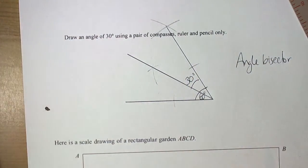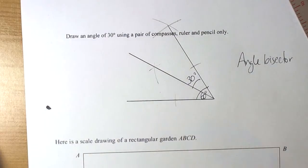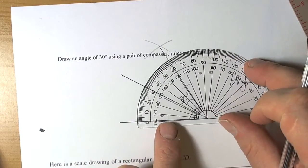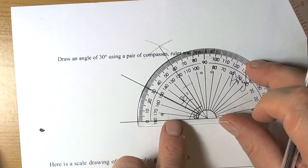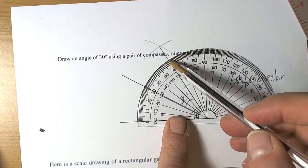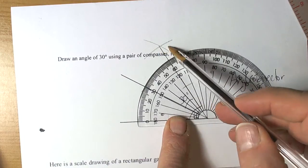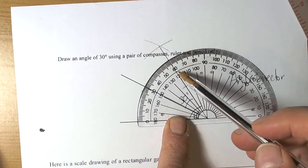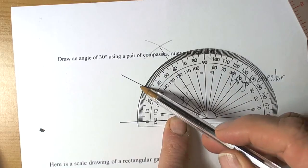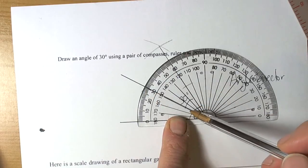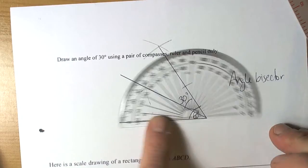If I get my protractor, I can obviously check if that's worked. 60 degrees was the original angle by doing the two arcs for the side of the equilateral triangle, and the angle bisector at 30 degrees. So we've cut this at 30 degrees.